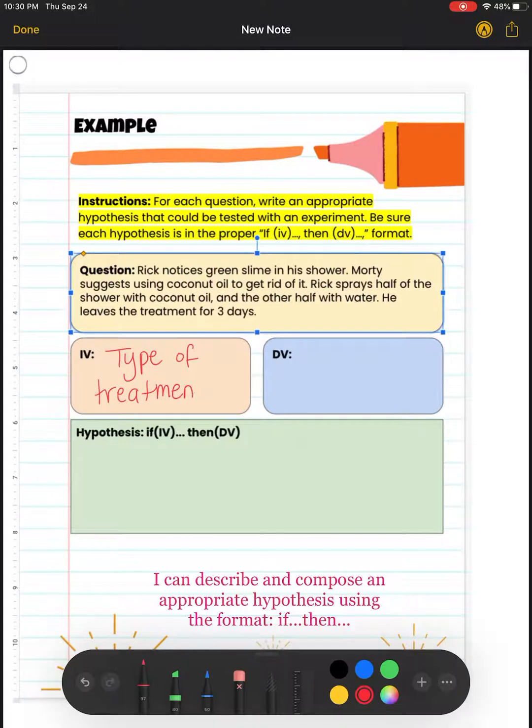Next, we have the dependent variable. The dependent variable, if you remember, is the variable that is being measured or observed. Now, this scenario is not very explicit in terms of identifying the variables for you, so we need to do a little bit of deduction, inference, and scientific reasoning to kind of figure out what the dependent variable might be.